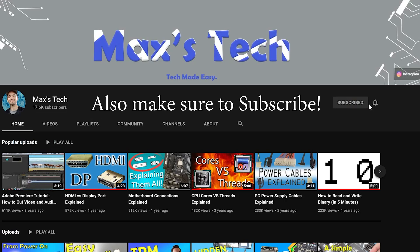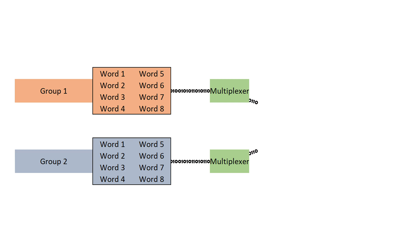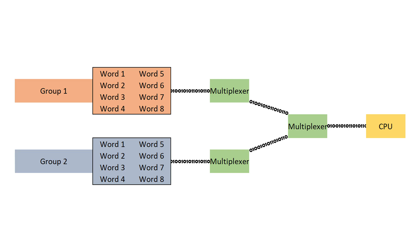If you want me to go into the differences between graphics memory and system memory I can do that in another video — just leave a comment below. Now, back to bank groups: instead of having a giant 16-word prefetch buffer, they split this into two different groups of eight-word prefetch buffers that act completely independent of each other. Each group has its own multiplexer which takes all eight words of data and combines them into one line of code. Those two lines are then combined with their own multiplexer to give your output of one code for all the banked groups, which is then sent to your processor.